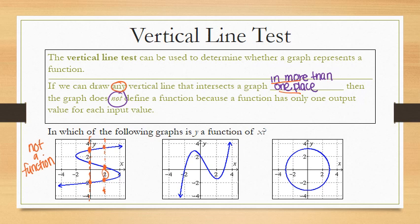If I look at the second one, this is a function. And that's because if I draw a vertical line anywhere, I'm only going to intersect this graph in at most one place.